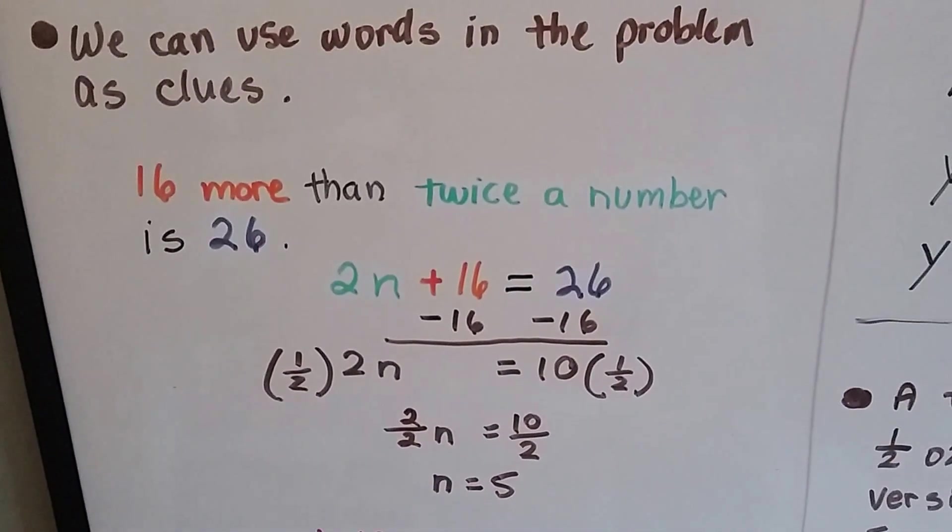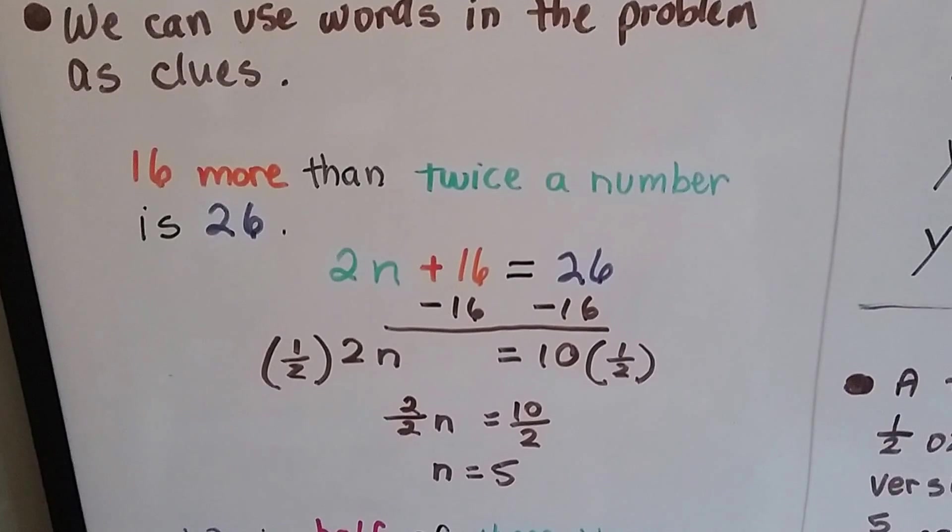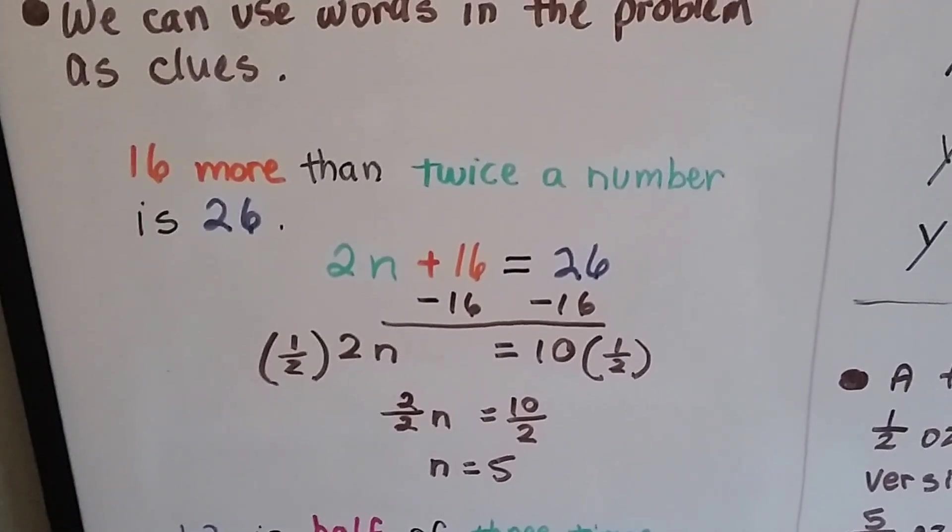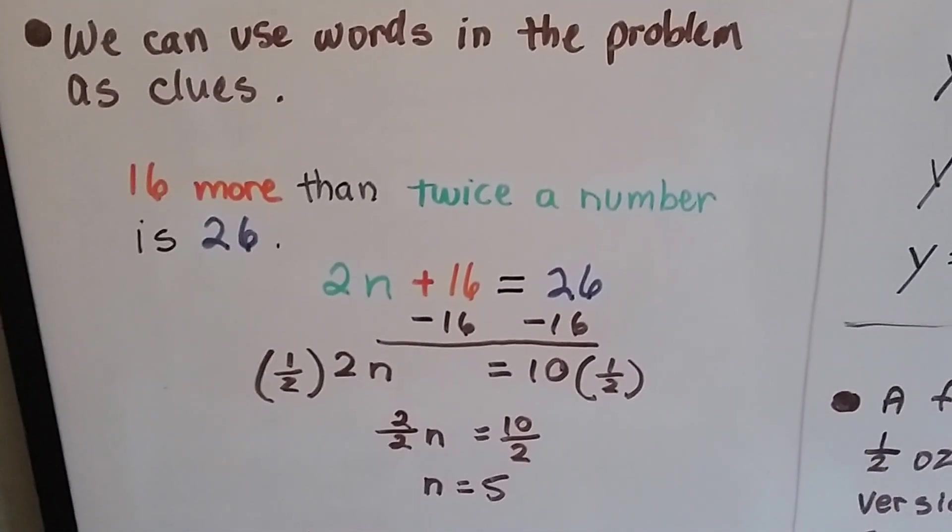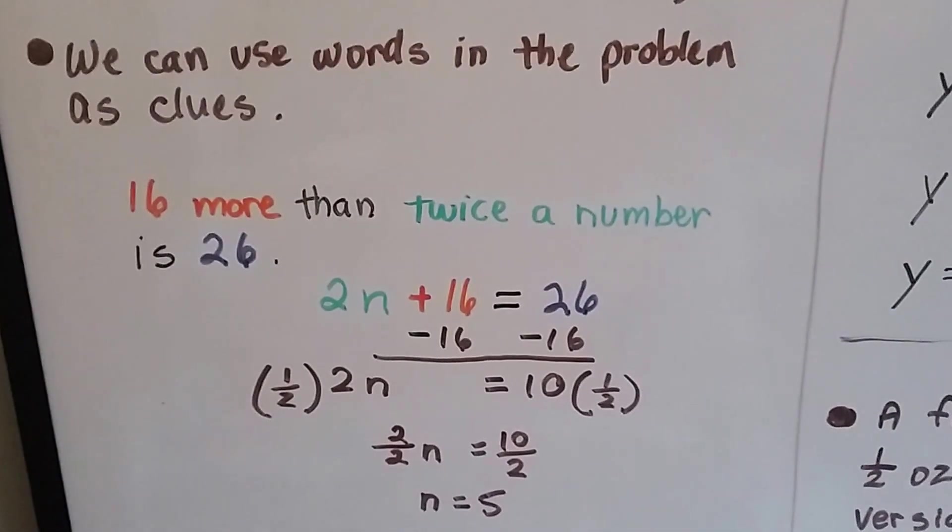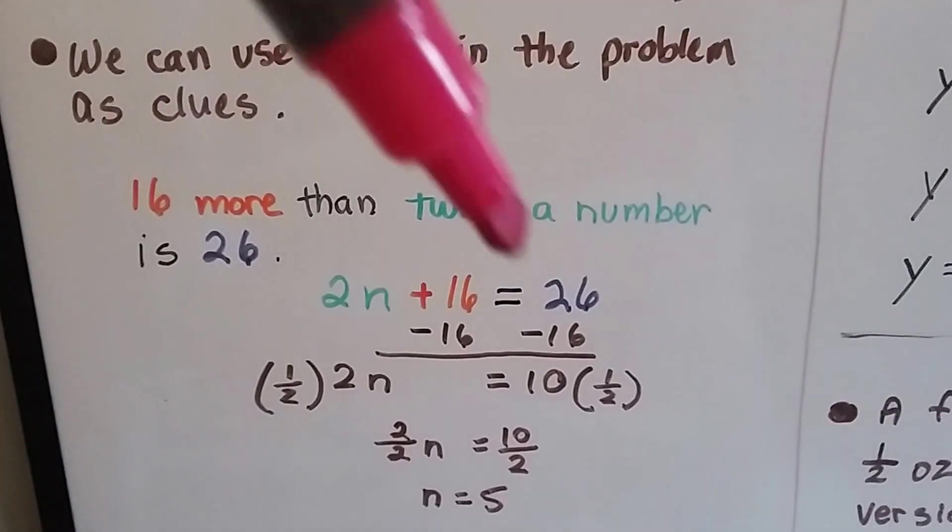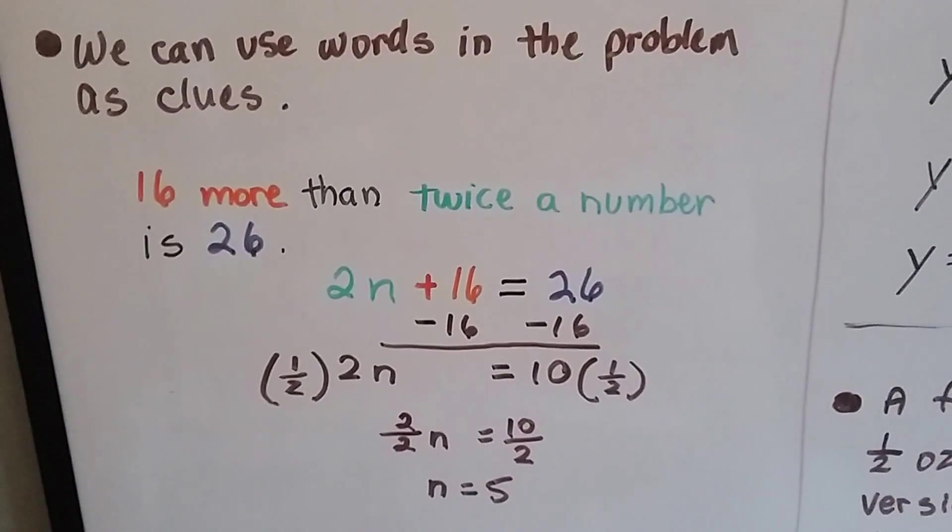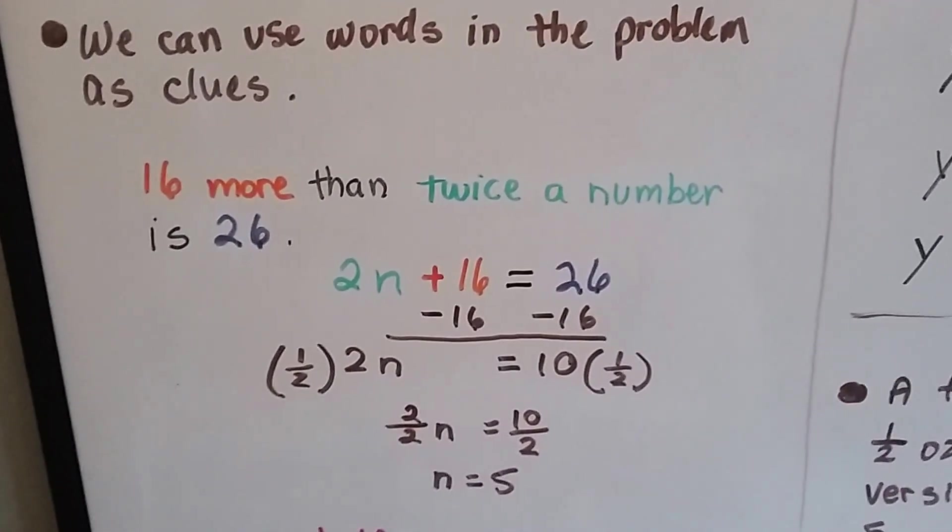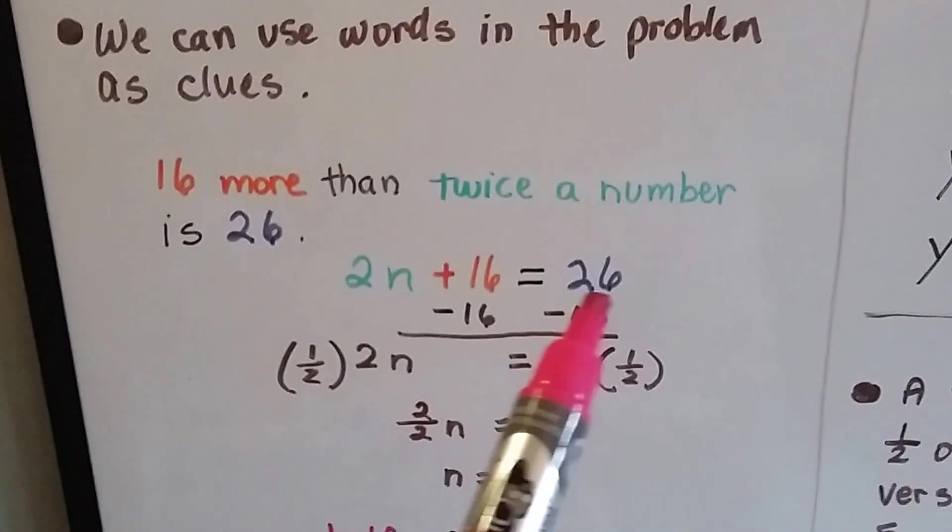If you see 16 more than twice a number is 26, well, 16 more tells us we're going to add 16. Twice a number tells us it's going to be 2n. Is means the equal sign, and 26 is going to be the solution. So, what it equals.